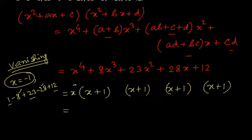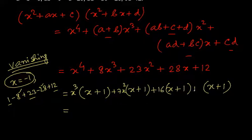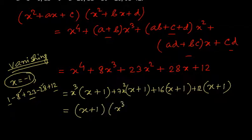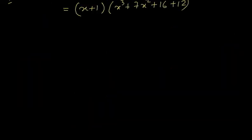Using the vanishing method, I am dividing by (X + 1). On balancing we get X³, then 7X², then 16X, and 12. So on taking (X+1) common we are getting X³ + 7X² + 16X + 12.